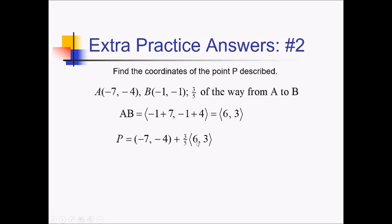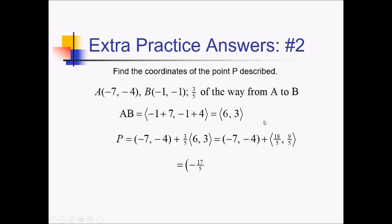So let me distribute this three-fifths. We have 6 times 3/5, that's 18-fifths. And then we also have 3 times 3/5, so 9-fifths. Adding this together: negative 7 plus 18-fifths — this is really going to be negative 35-fifths — so with 18, that's going to give us negative 17-fifths. And then negative 4, we can think of that as negative 20-fifths. So add that to 9-fifths, and you've got negative 11-fifths.